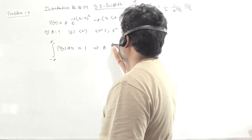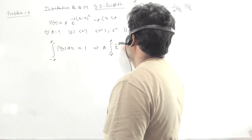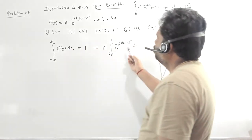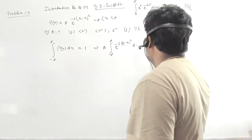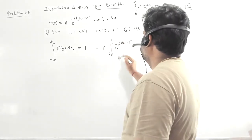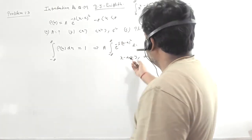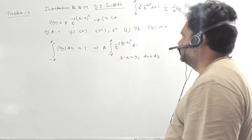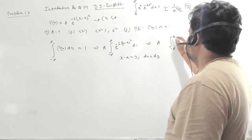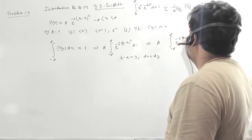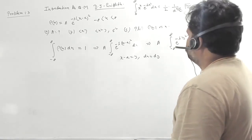So we take a times the integral from minus infinity to plus infinity of e^(−λ(x−a)²) dx. We substitute x minus a equals y, so dx equals dy, and y also goes from minus infinity to plus infinity. This integration becomes a times the integral from minus infinity to plus infinity of e^(−λy²) dy, and this value equals 1.